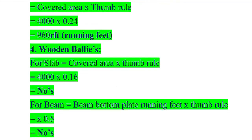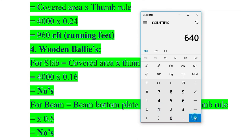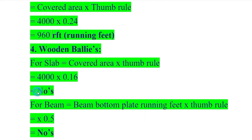For the number of beam bottom plates, the thumb rule is 0.16. Calculating: 4000 × 0.16 = 640. We require 640 numbers of beam bottom plates. These are measured in numbers.